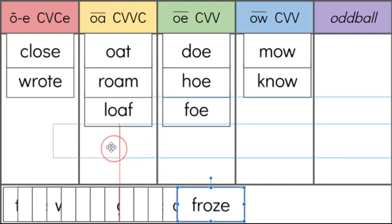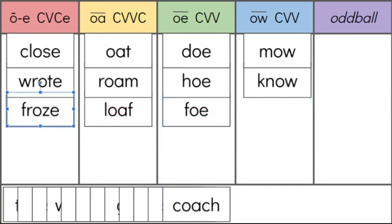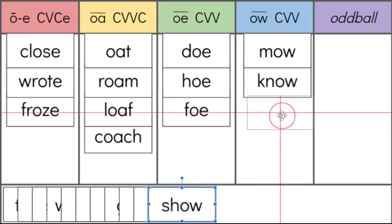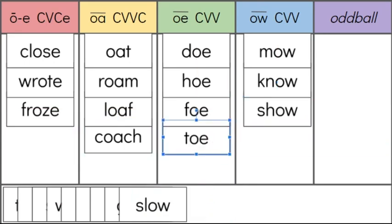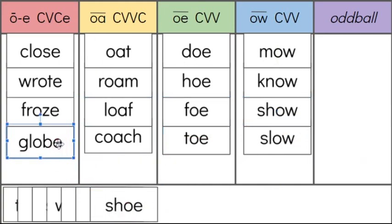FROZE. We can see the magic E. COACH. We have a vowel pair. SHOW. And TOE. With that O-E, the O sound at the end of the word. SLOW. Again the O sound at the end of the word. GLOBE. Back to the middle with this one, with the magic E.